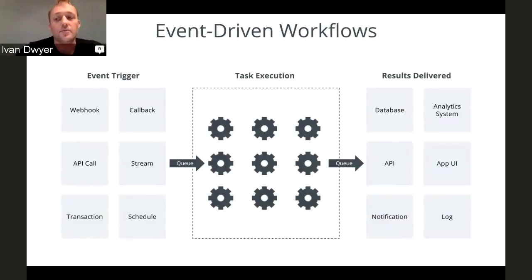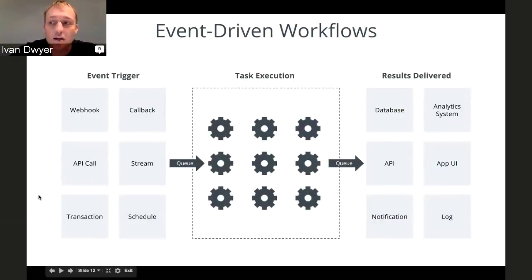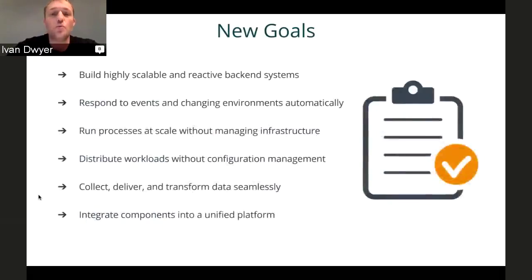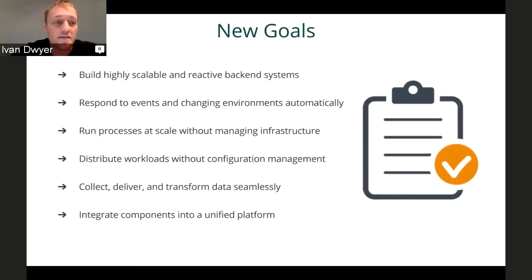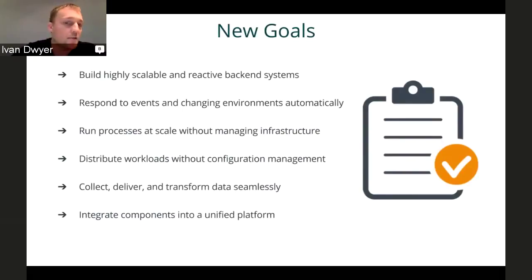If one of the tasks fails or one of the result endpoints can't be reached, you still have that state persisted. You're not losing data and you're not losing the execution path along the way. That's really important, and something we promote to all our customers — make sure everything is queued. We're dealing with asynchronous work here, so the queue is a key piece to that.